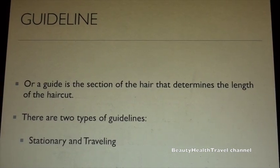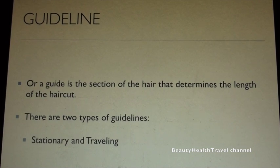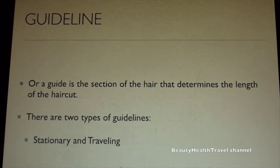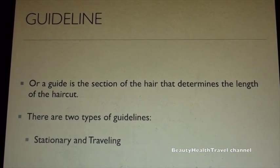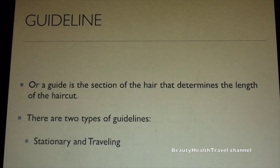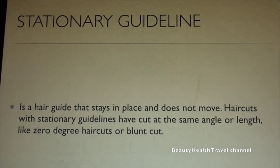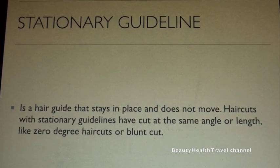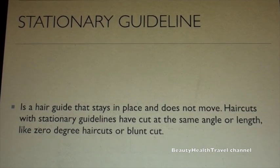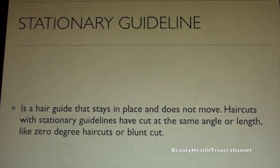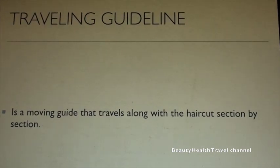A Guideline or guide is a section of the hair that determines the length of the haircut. There are two types of guidelines: Stationary and Traveling. A Stationary guideline is a hair guideline that stays in place and does not move. Haircuts with stationary guidelines are cut at the same angle or length, like zero degree haircuts or blunt cuts.